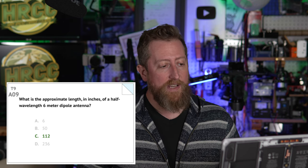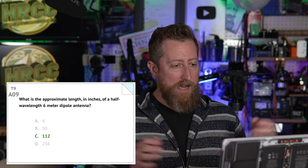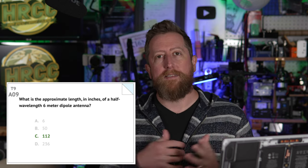Alpha 09: What is the approximate length in inches of a half-wavelength 6-meter dipole antenna? That is C — 112 inches. You can take 468 divided by the frequency to get close to the length in inches. Again, approximate — cut it a little longer and walk it in to the right length.